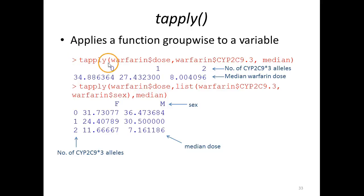We write tapply and start by the column containing the data we want to calculate the median of - that is, the dose column - followed by a column containing the group variable CYP2C9 dot 3, followed by the command that we would like to apply, median in this case.